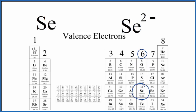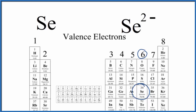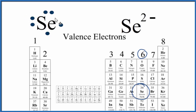You can see the general trend here — we skip the transition metals, all the way up to 8. So we're going to have 6 valence electrons for Se. We can just put these around the Se atom, and this would be the Lewis structure for neutral Se.